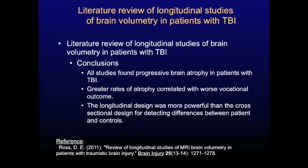The conclusion of this literature review was as follows: all studies using the longitudinal design found progressive atrophy in patients with traumatic brain injury. Greater rates of atrophy correlated with decreased ability to return to work, and the longitudinal design was much more powerful than the cross-sectional design for detecting progressive atrophy in patients with traumatic brain injury.